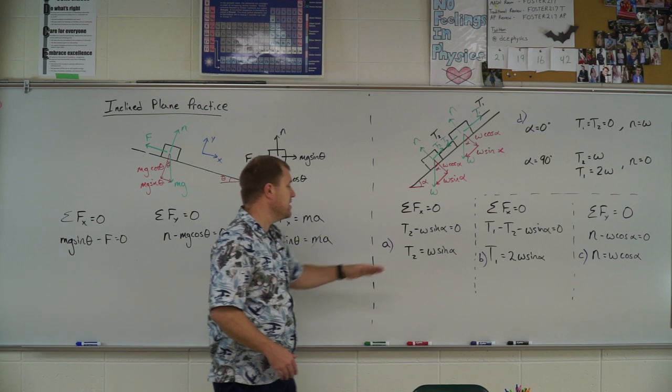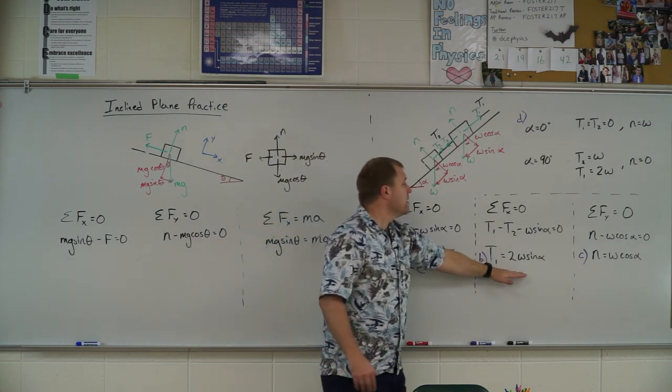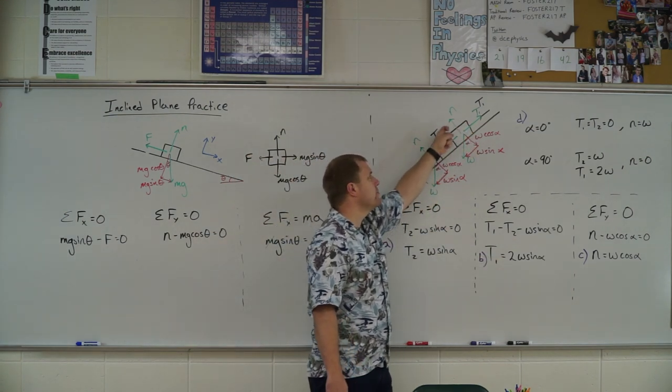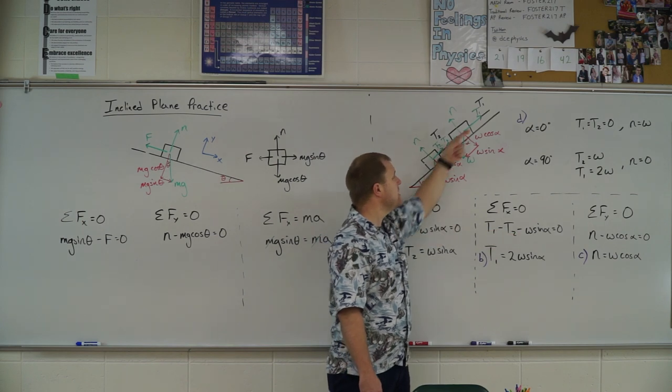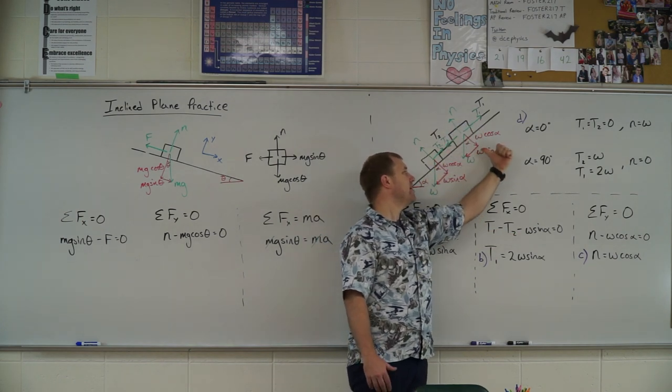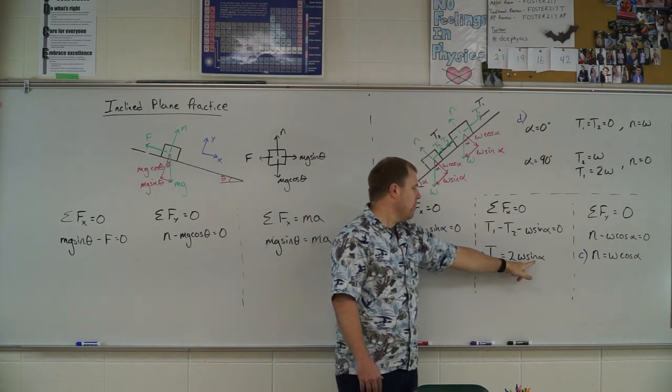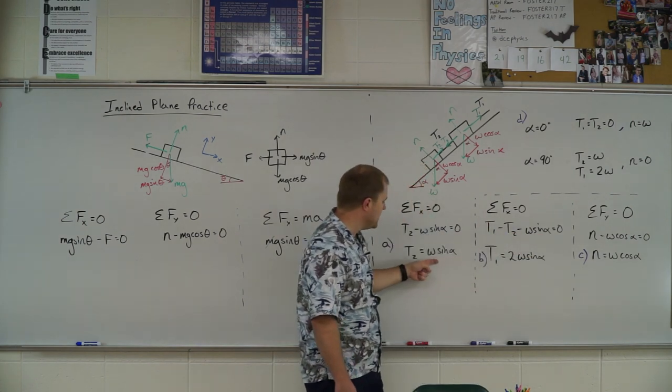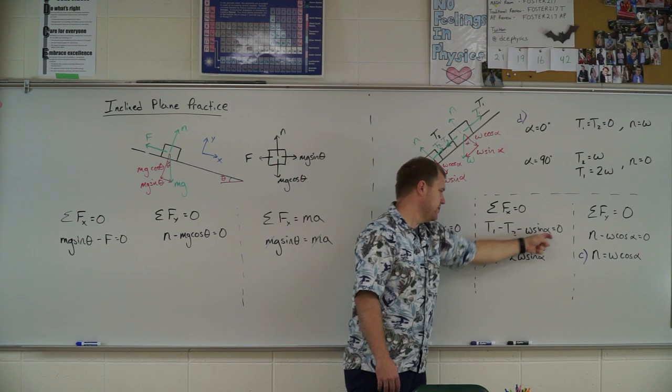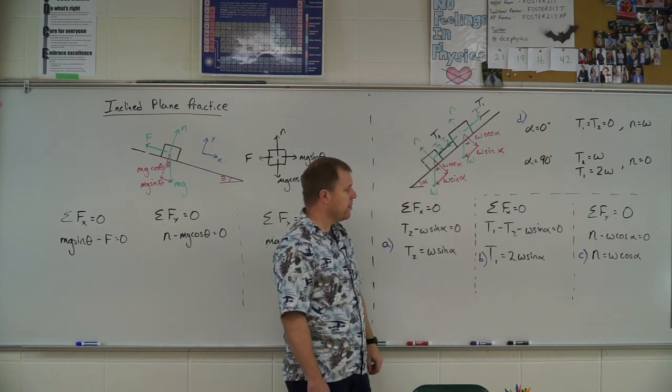No numbers here, kind of crazy. Part B wants us to generate an equation for our upper block. So I have T1 pulling it up, T2 pulling it down, and this component of the weight, W sine alpha. So I substitute in my T2 value, I get two W sine alphas, that's part B.